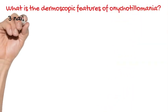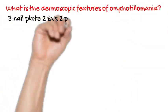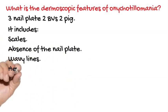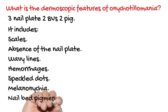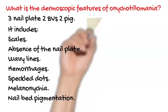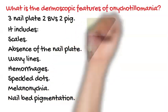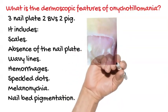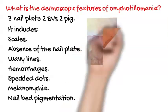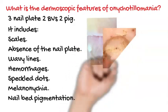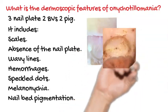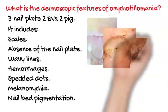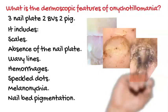We will describe seven criteria of onychotillomania on onychoscopy: three related to the nail plate, two related to blood vessels, and two related to pigmentary changes. The features are scales, absence of the nail plate, wavy lines, hemorrhages, speckled dots, melanonychia, and nail bed pigmentation.